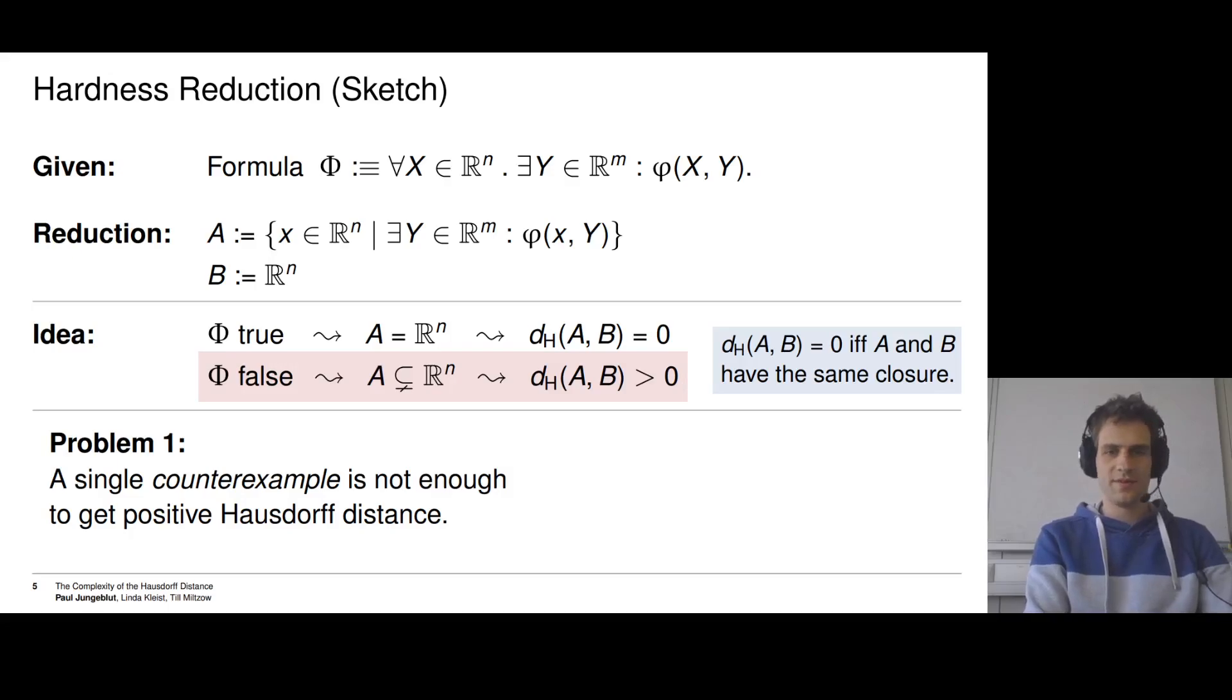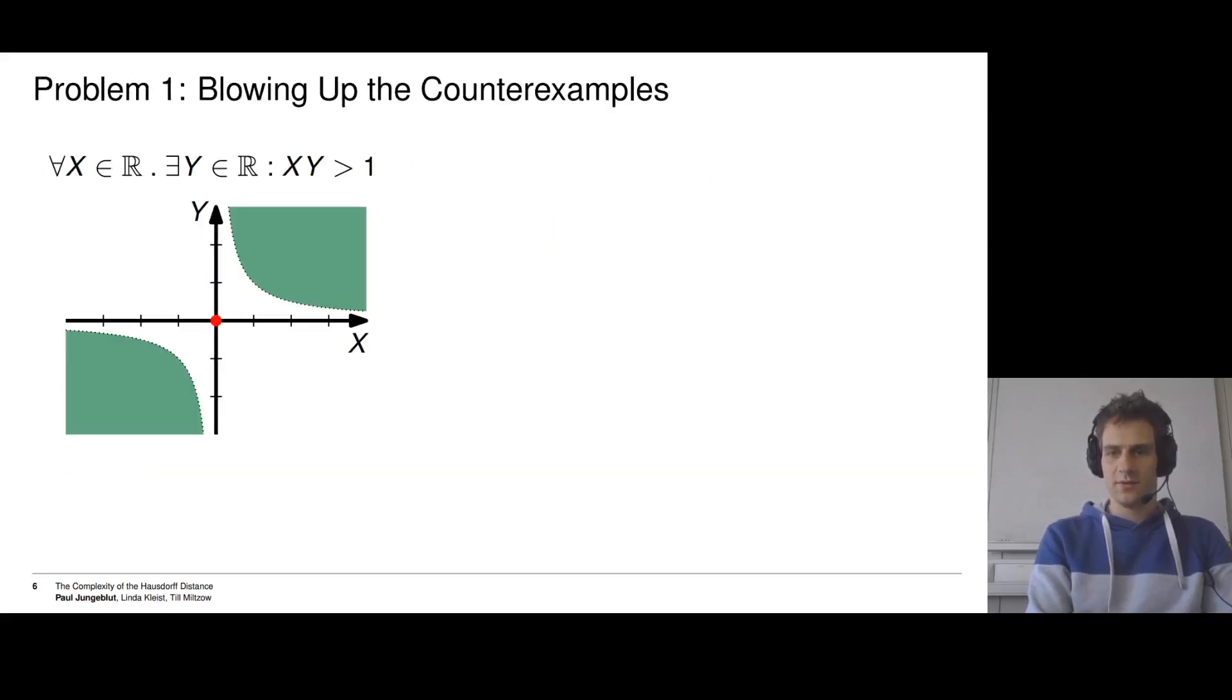The second problem is the definition of A, which contains an existential quantifier. But our definition for the formulas A and B required them to be quantifier-free. And we can't just use quantifier elimination because this would lead to an exponential blow-up in the formula size, and we could not write down the formula in polynomial time.